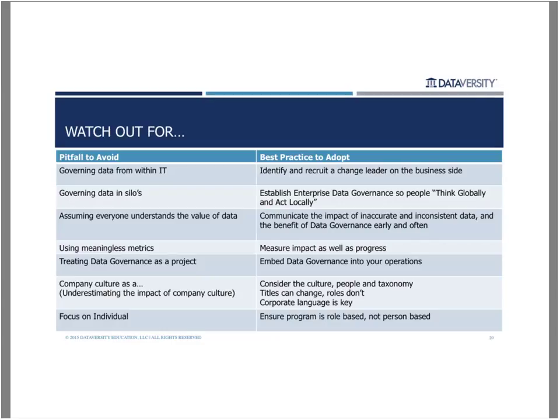Let's go through a few pitfalls identified as we've matured data governance as an industry. The first is governing data only within IT. It's not a pitfall in and of itself — data does need to be governed within IT. But data cannot only be governed within IT. Data needs to be governed across its entire lifecycle, and data is usually not created in IT — it may be managed there, but it's not acquired or necessarily analyzed there except from a quality perspective. It's important that data is governed across the organization, not just within IT.